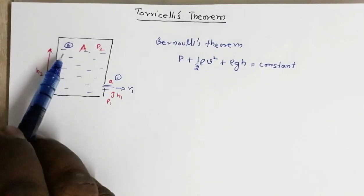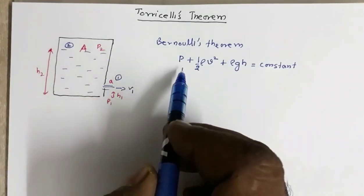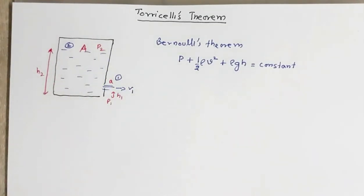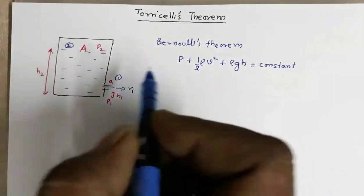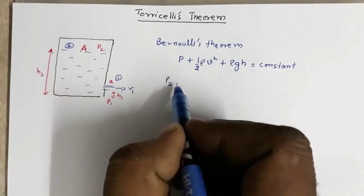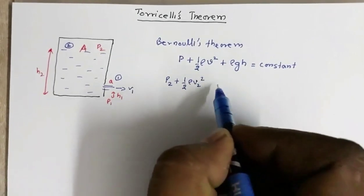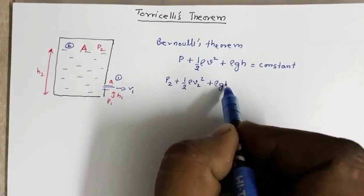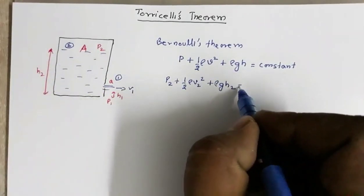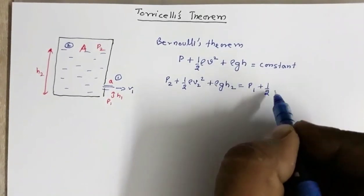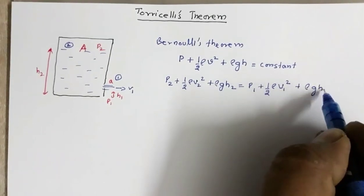If I take region 2 and region 1, these quantities will be equal. For region 2, the pressure is p2. So we have: p2 plus half rho v2 squared plus rho g h2 equals p1 plus half rho v1 squared plus rho g h1.